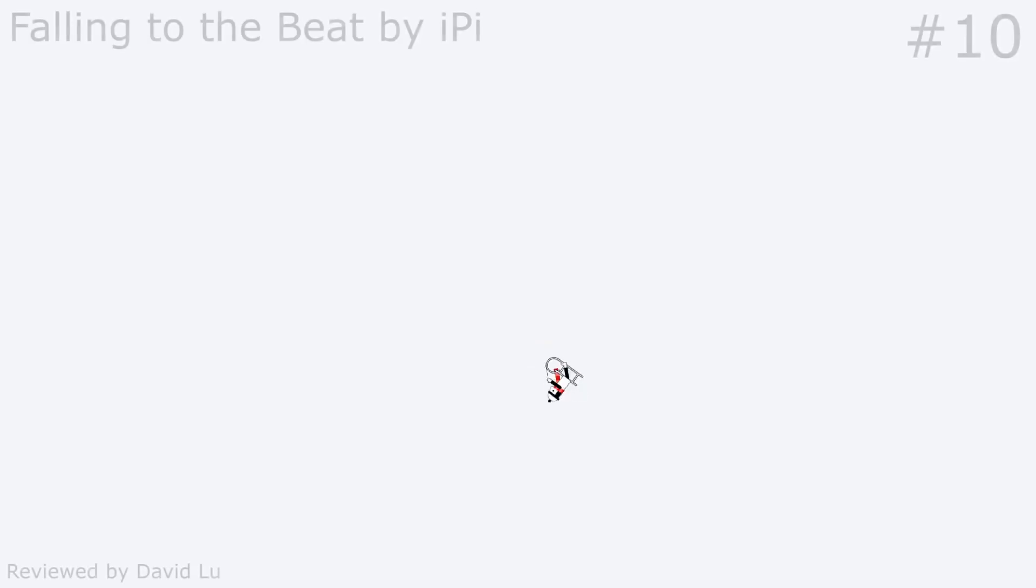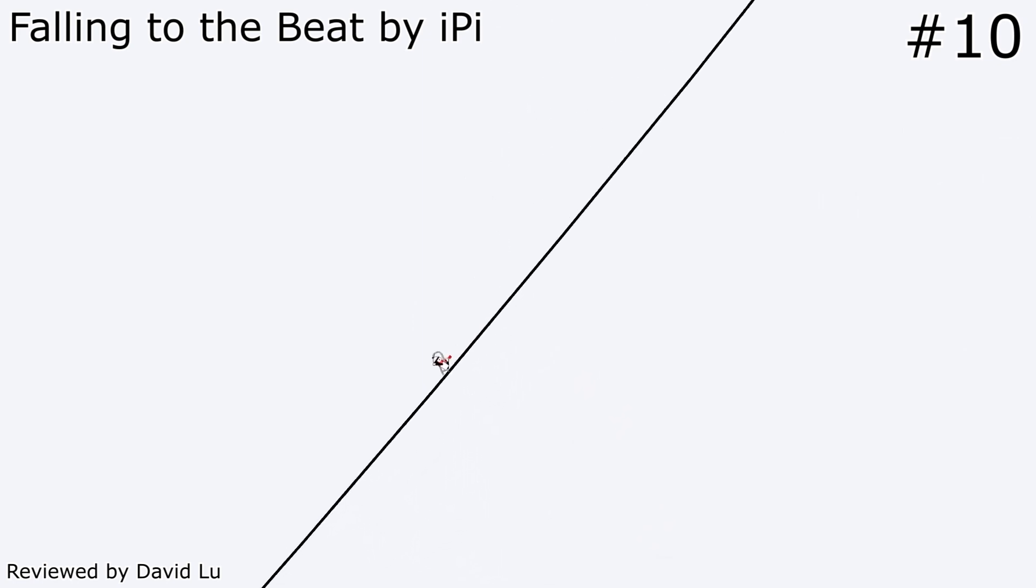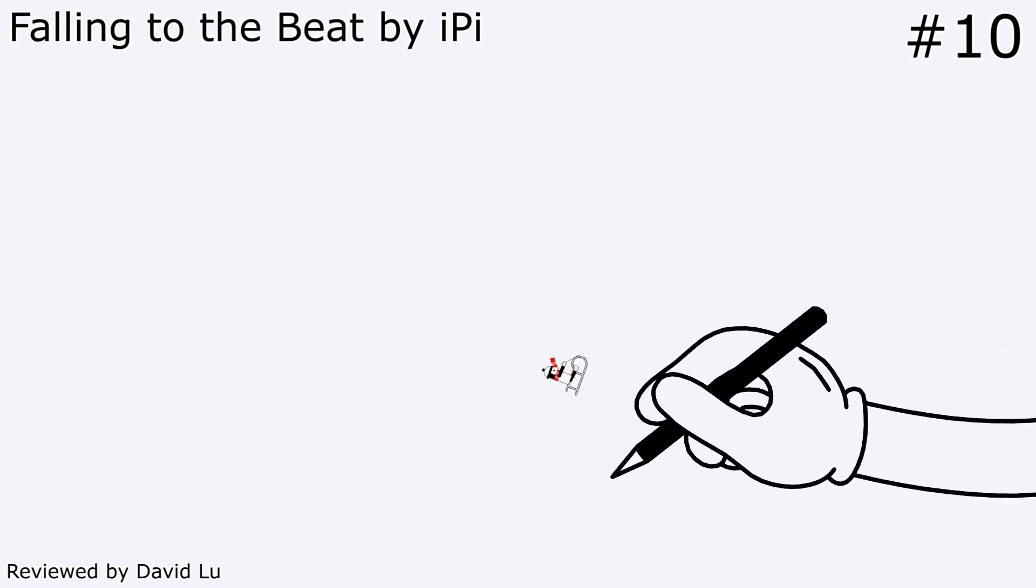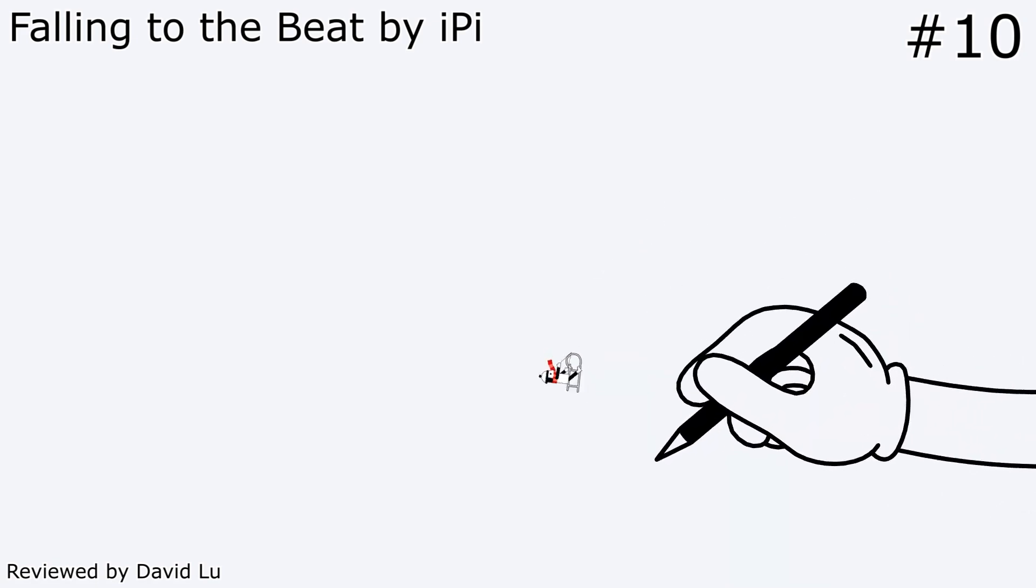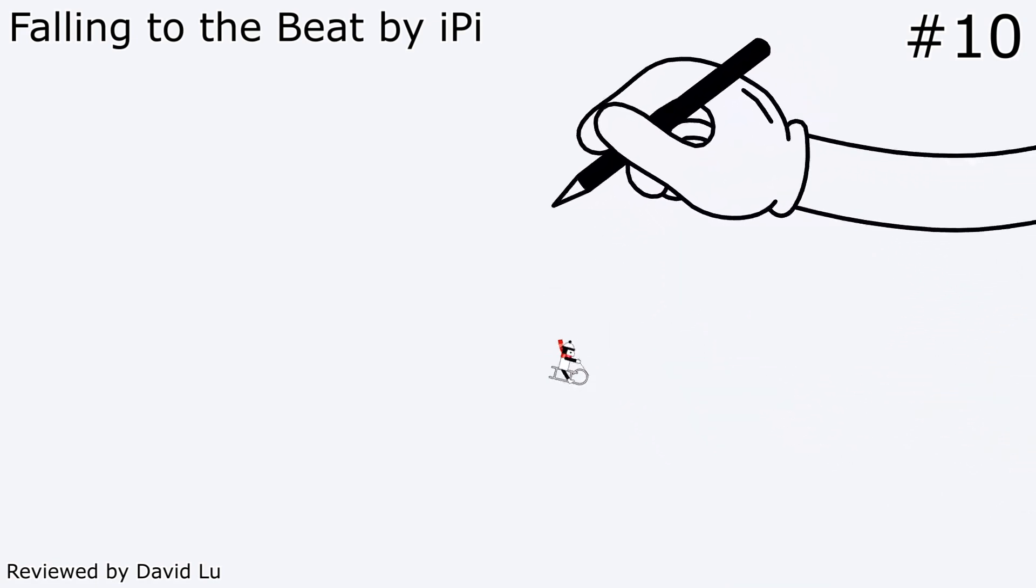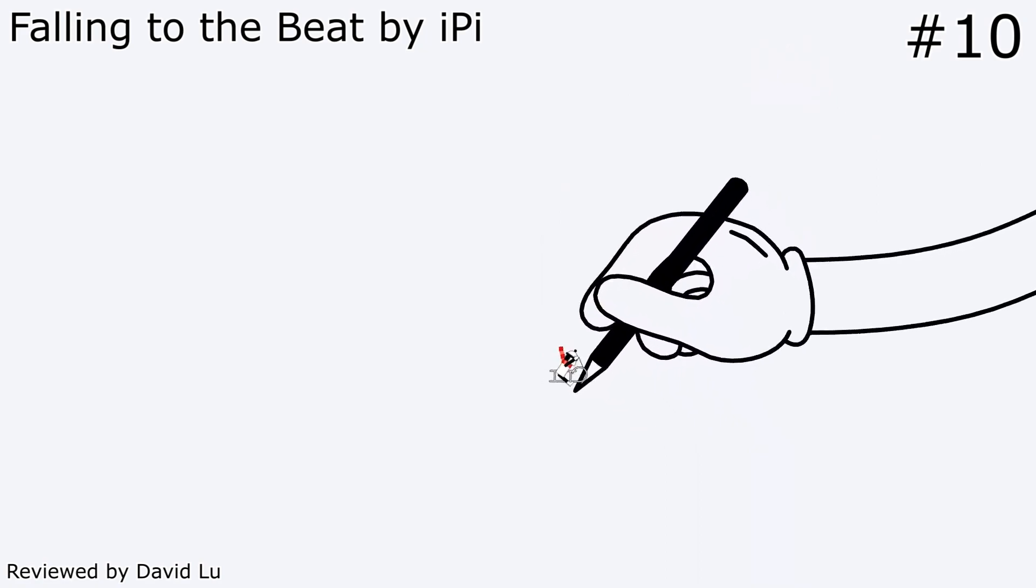Number 10, Falling to the Beat by iPai. Falling to the Beat is a technical track featuring incredibly impressive animation and movement-based musical expression. This track is notable for the novel and effective usage of isolated frame animation, where the rider moves so fast that each frame is completely separated from the previous frame, which enables the track maker to draw in lines that appear to be animated.